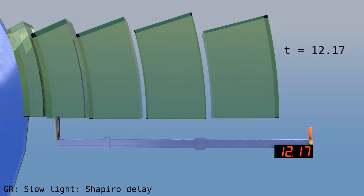And the clock shows about 12 seconds, which is more than 10. Since we know that the total distance is 10 units of length, the average speed of light was 0.82. This delay is called the Shapiro delay and is one of the four classic tests of general relativity.